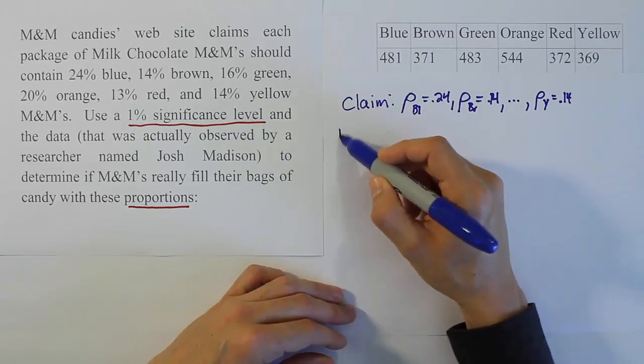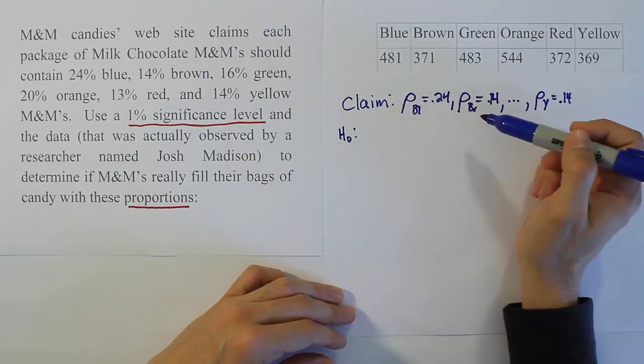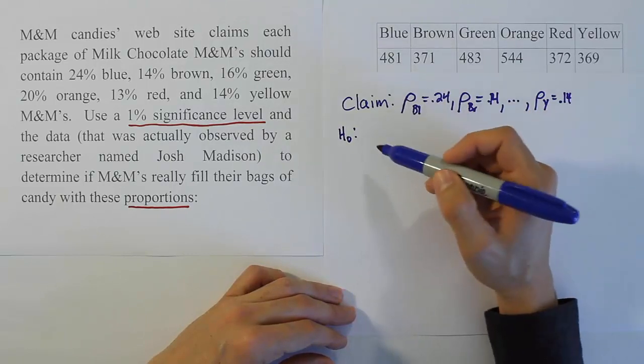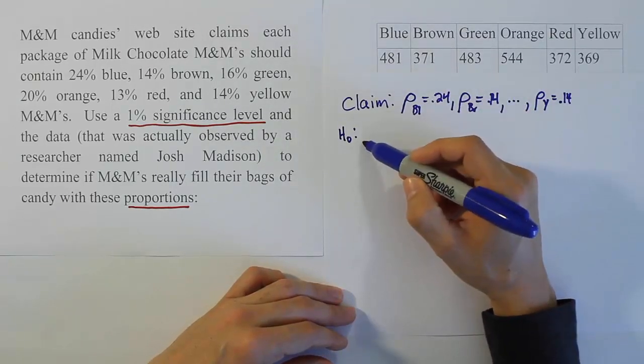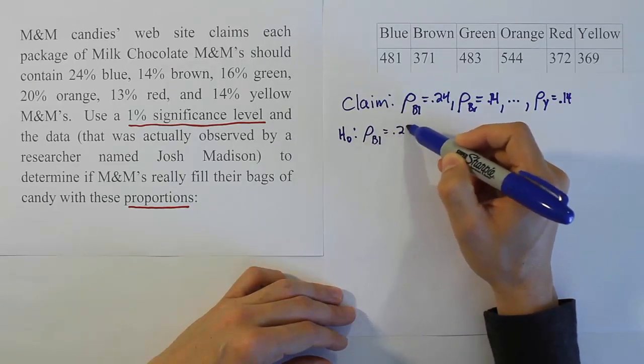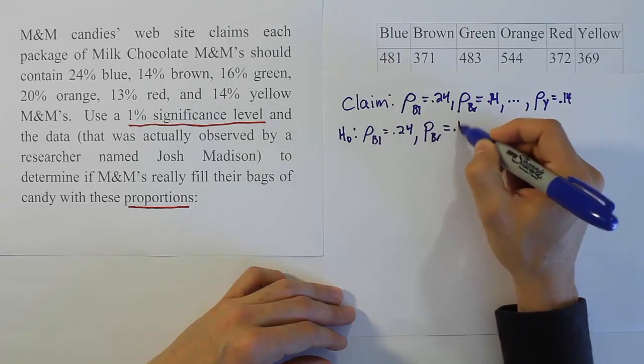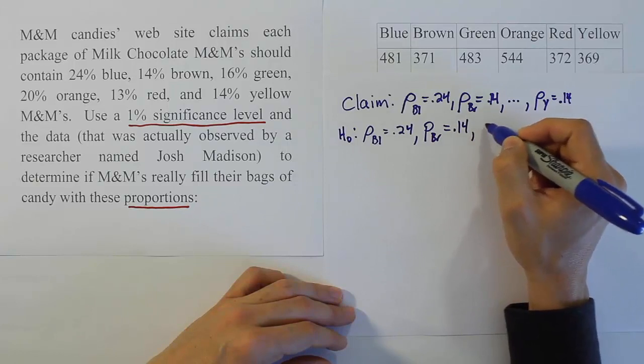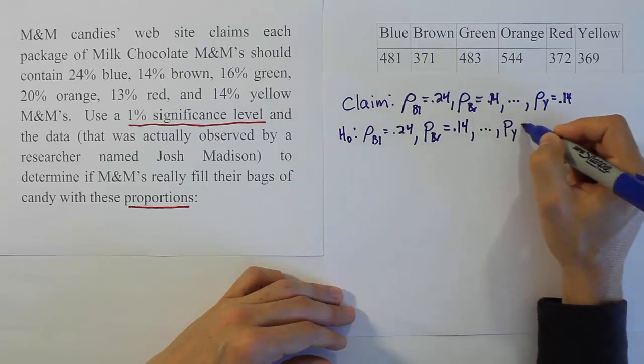H0 is the idea that the claim is true, same as the claim. So blue equals 0.24, proportion of brown is 0.14, through proportion of yellow equals 14%.